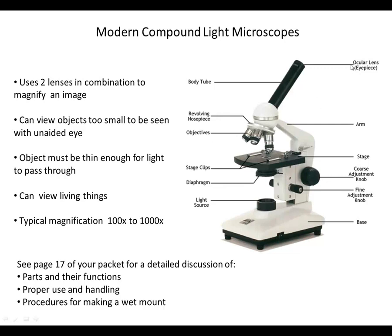The way we calculate total magnification is objective lens times eyepiece lens magnification. So 4x for scanning times 10x for the ocular gives a total magnification of 40x. We always start with the scanning lens — it gives us the best opportunity to find our specimen and the largest field of view. The yellow-banded low power lens has a magnification of 10x; combined with the 10x ocular, that gives 100x total. The blue-banded high power lens has a magnification of 40x; combined with the 10x ocular, that gives 400x total.